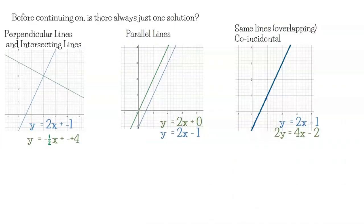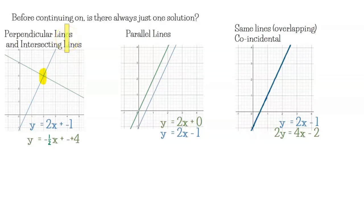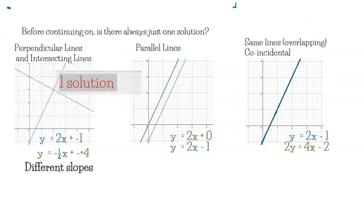Before moving on, I want to point out that there isn't always one solution. There are three different cases. The first is intersecting lines — including perpendicular lines, where the angle between them is 90 degrees. When the slopes are different, the lines cross and there is one solution.